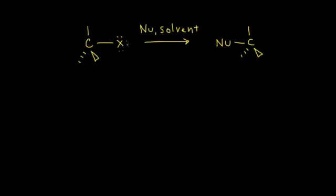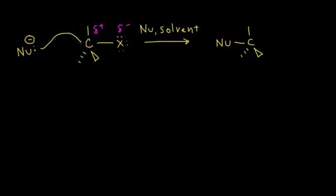In an SN2 reaction, the bond between the carbon and the halogen is polarized. The halogen is more electronegative than the carbon, so it pulls the electrons in this bond closer to itself, giving the halogen a partial negative charge. The carbon is therefore partially positively charged. When the negatively charged nucleophile comes along, it is attracted to the partial positive carbon and attacks it. This attack happens at the same time the halogen leaves, and SN2 reactions require a strong nucleophile.